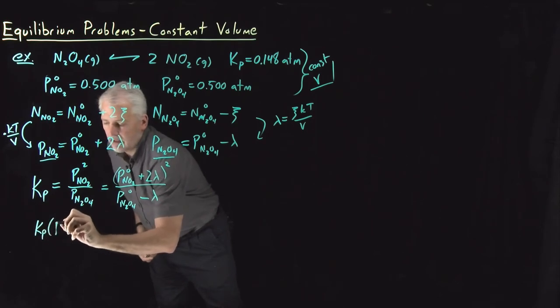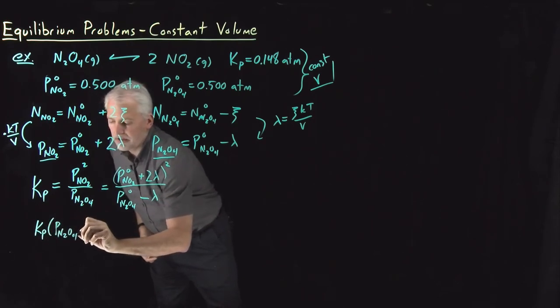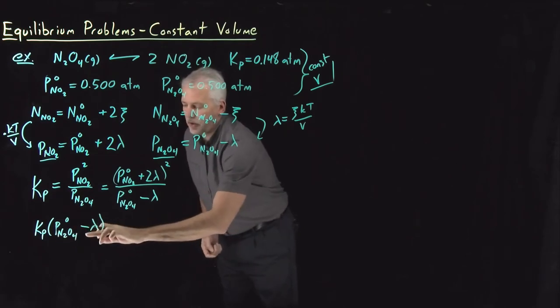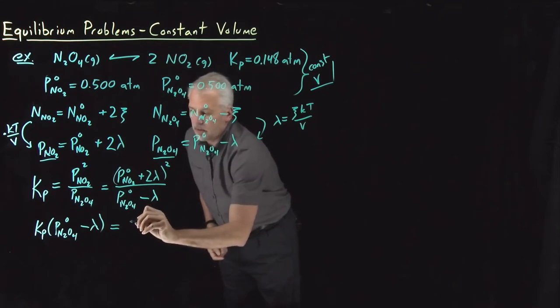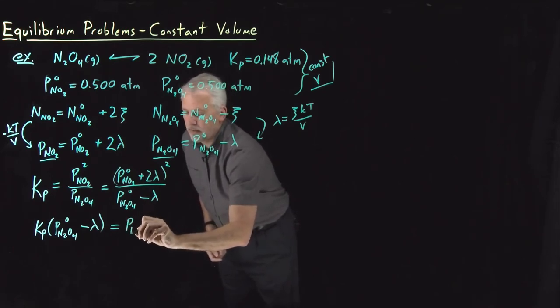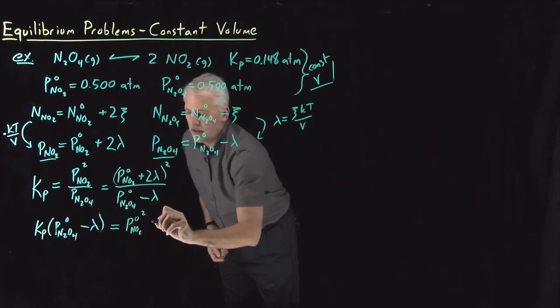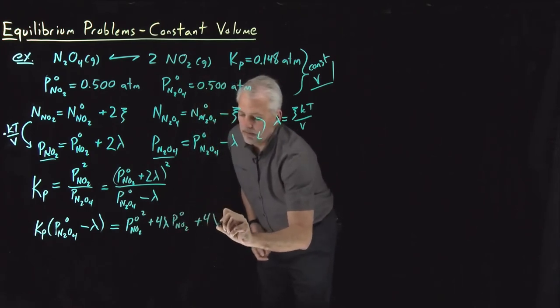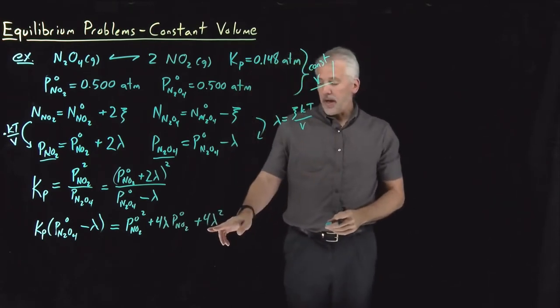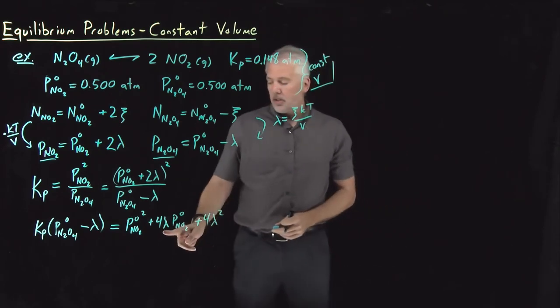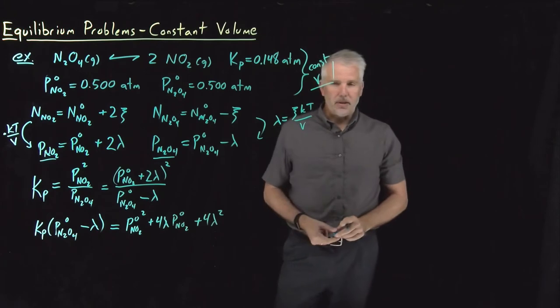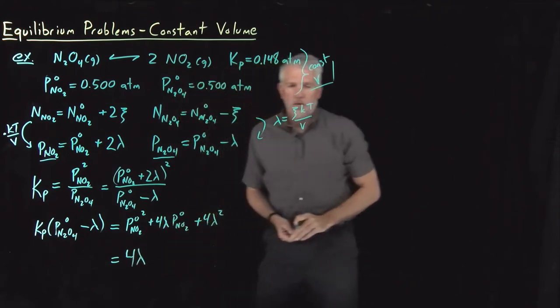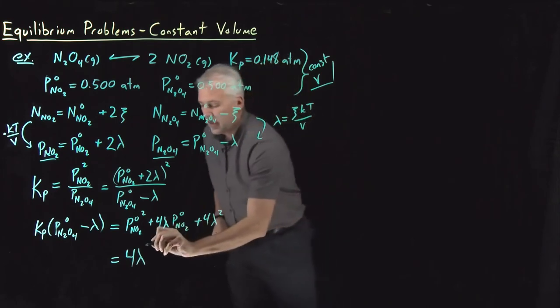So if I rearrange a little bit to get the fraction broken down, equilibrium constant times the amount of N2O4, pressure of N2O4, on the left, is equal to, I'll go ahead and expand the square and write pressure of NO2 squared plus 4 lambda pressure of NO2 initial plus 4 lambda squared. So now we can see pretty clearly that's a quadratic equation. I've got terms that depend on lambda squared, terms that depend on lambda to the first power, and some terms that don't depend on lambda at all.